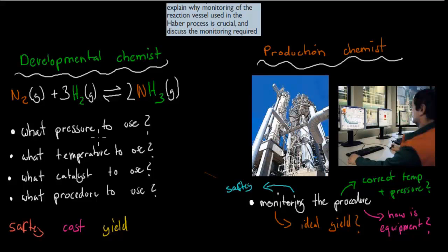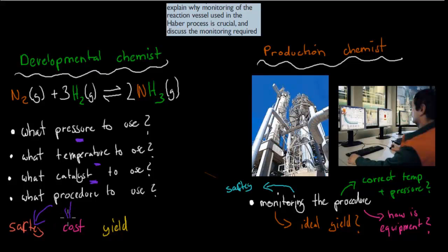So this is the job of a developmental chemist. He has to come up with the whole procedure and all the fine details. He has to figure out what pressure to use to best increase the yield, what temperatures will give a high rate of reaction but not hurt the percentage yield, what catalyst to use to lower the activation energy, and what procedures overall help to ensure a safe, cost-effective procedure that gives the highest possible yield of ammonia. He comes up with this theoretical concept of what procedures need to be in place to maximize the efficiency of the industrial process.